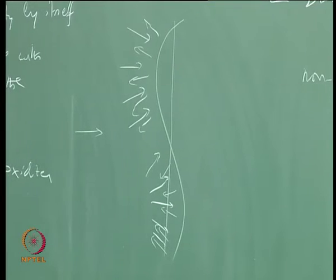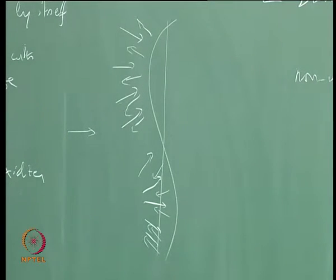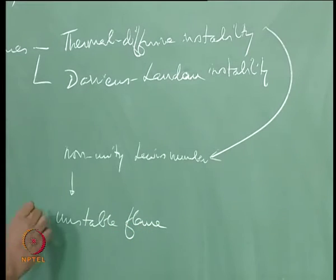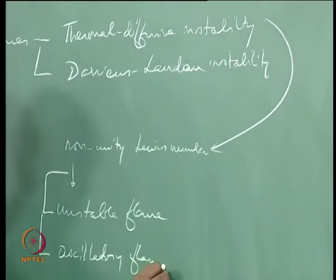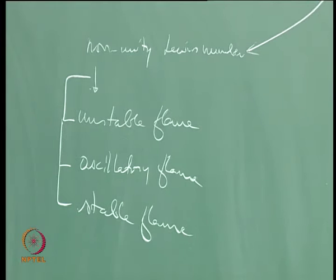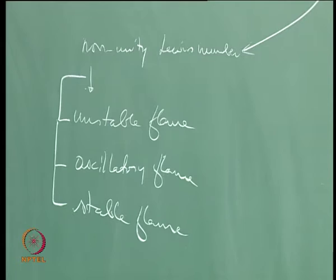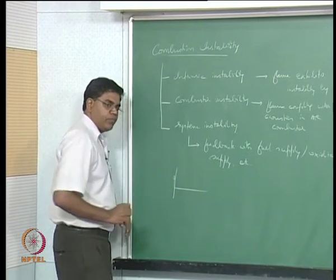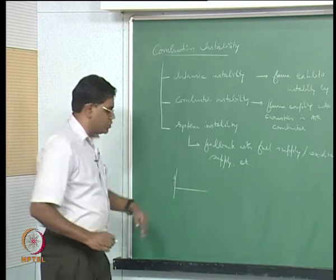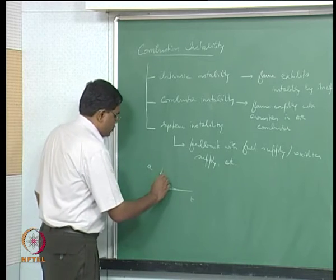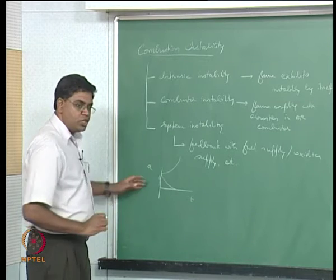Depending on the Lewis number, there are ranges for which the flame is unstable. If you start from an equilibrium and give a perturbation, the amplitude can decay — that is stable — or grow exponentially — that is unstable.